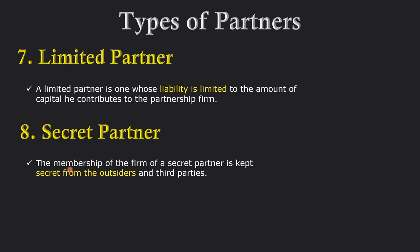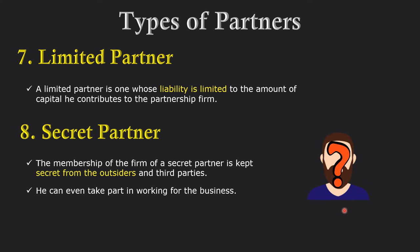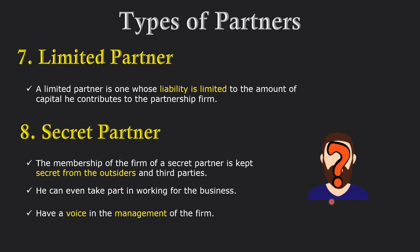However, according to the Partnership Act 1932, there is also a secret partner whose identity is kept secret from outsiders and third parties. A secret partner, like other partners, participates in all activities of the firm, takes part in decisions, has a voice in management, and also enjoys and bears profit and loss — it's just that outsiders or third parties are unaware that this person is also a partner in the firm.